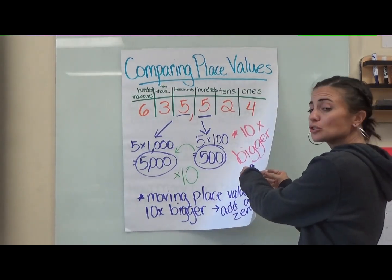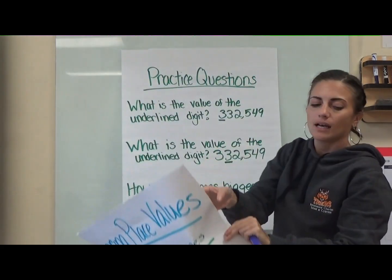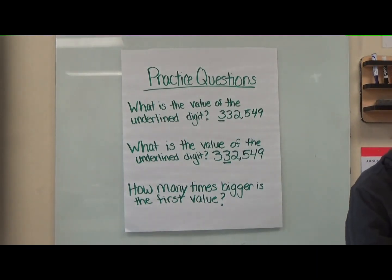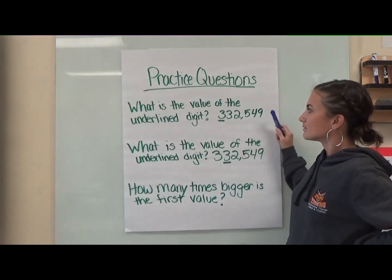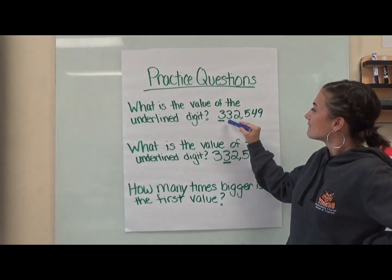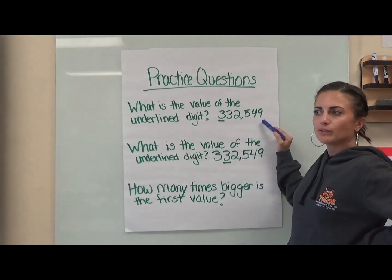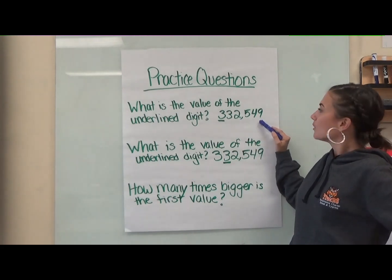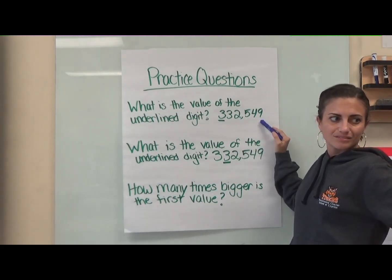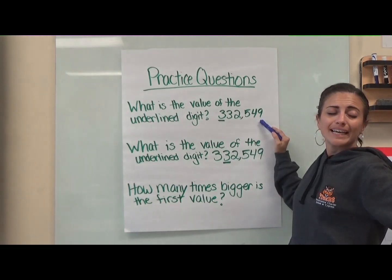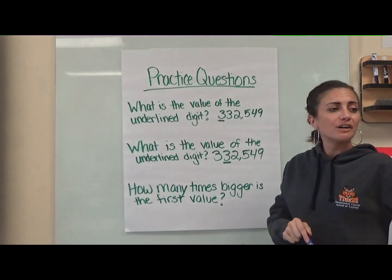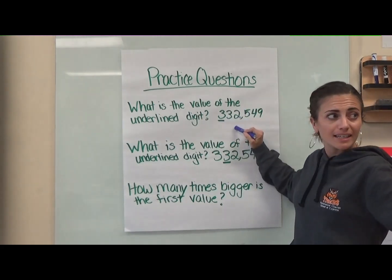So before we wrap up today, let's do a couple of practice problems to see if we understand them. The first one — can I get a volunteer to read it nice and loud? What is the value of the underlined digit? Three. The number three. Three hundred thirty-two thousand five hundred forty-nine. Perfect — three hundred and thirty-two thousand five hundred forty-nine.